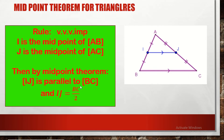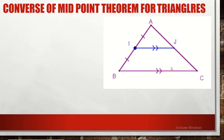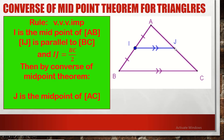Now let's learn about the converse of midpoint theorem. If we have a triangle ABC and we are given one and only one midpoint I, the midpoint of segment AB, and from this midpoint we draw a line parallel to the base BC, then by the converse of midpoint theorem, J will be the midpoint of segment AC. The parallel line from this midpoint will cut the second side at its midpoint exactly.